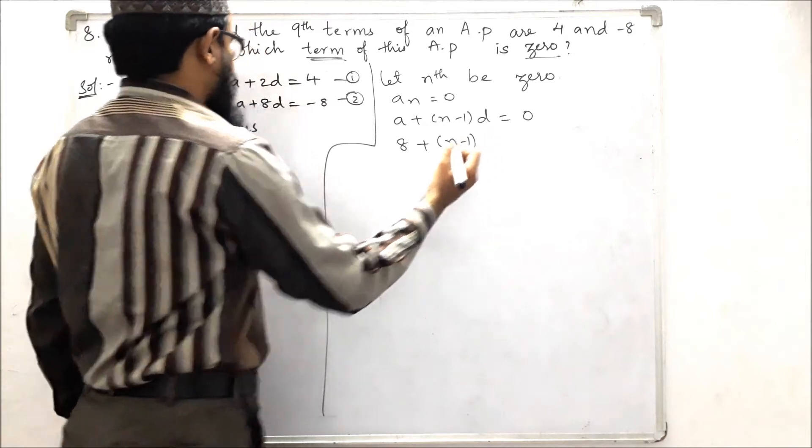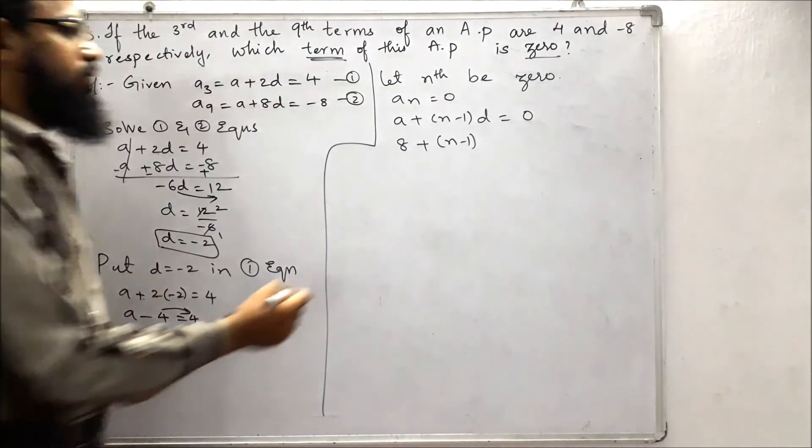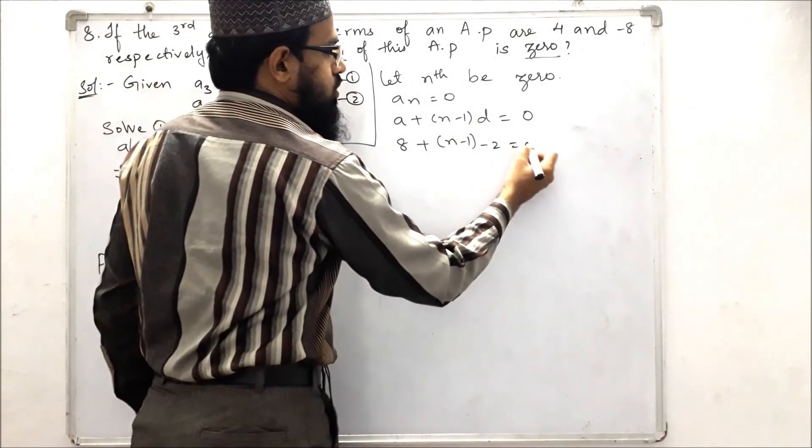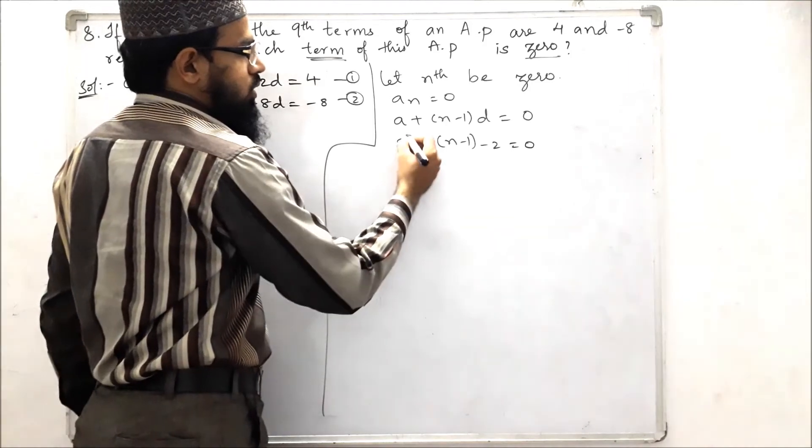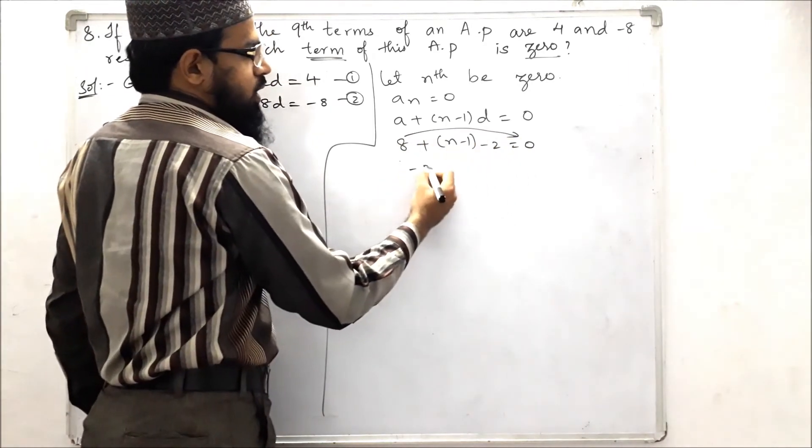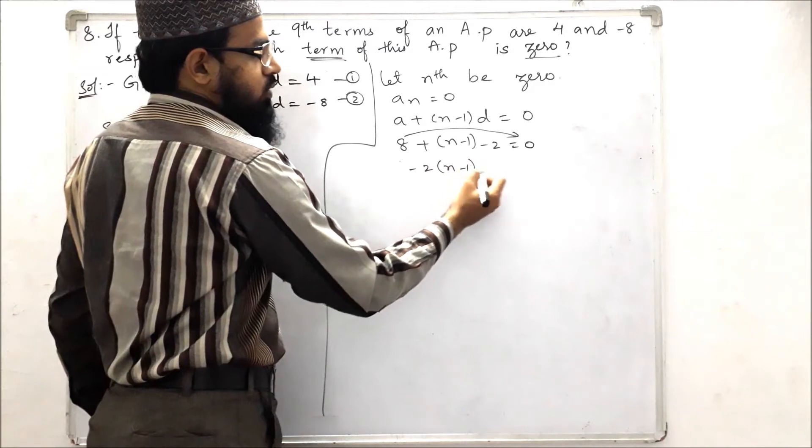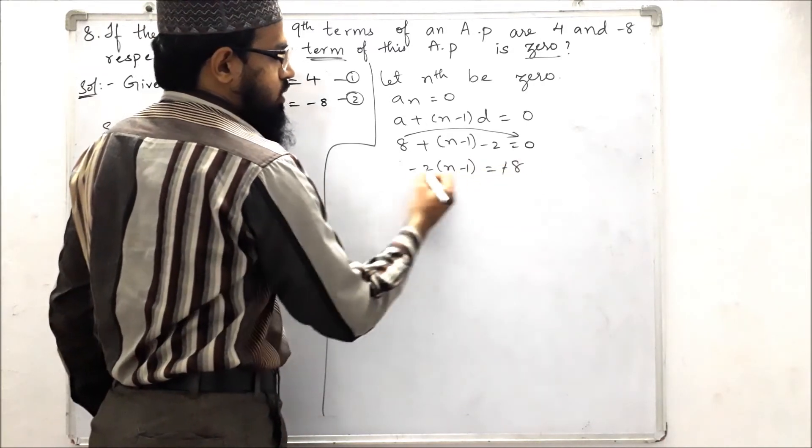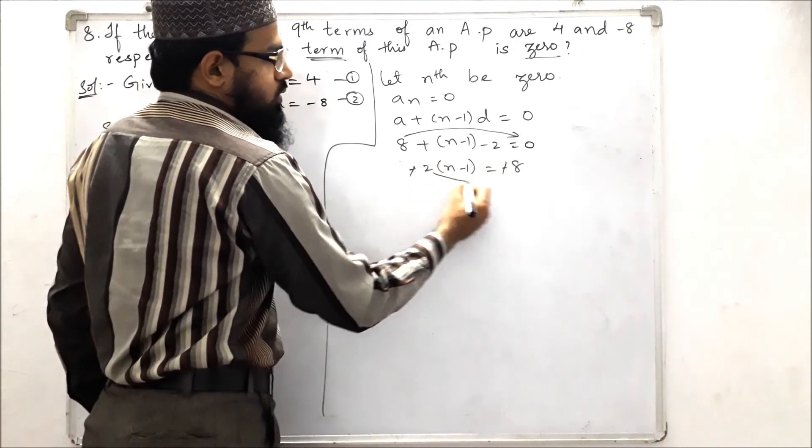d is minus 2, so 8 plus n minus 1 times minus 2 is equals to 0. Let us send this 8 to that side. Minus 2 into n minus 1 is equals to minus 8.